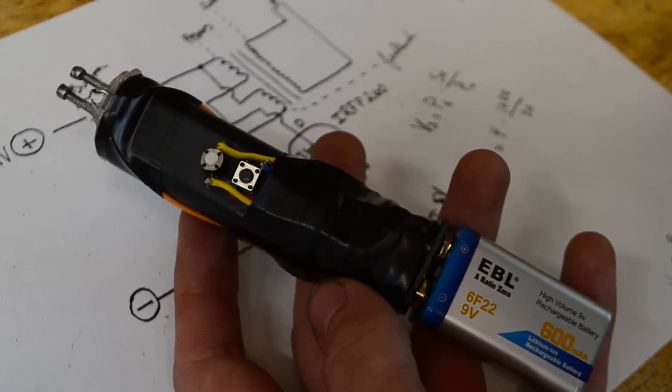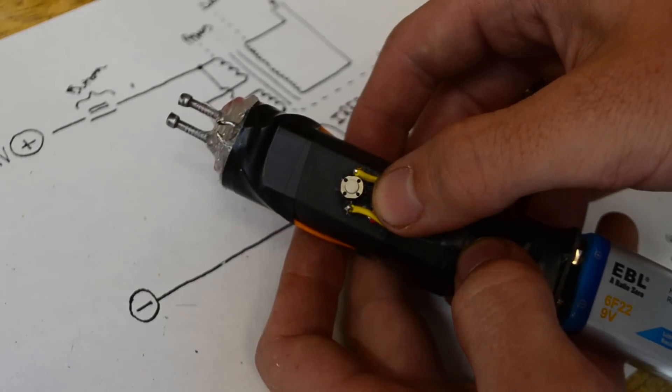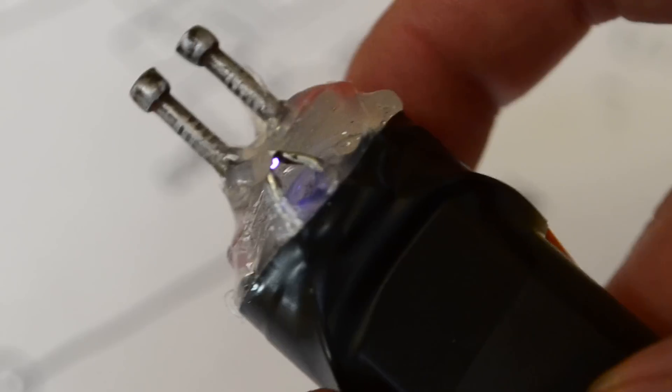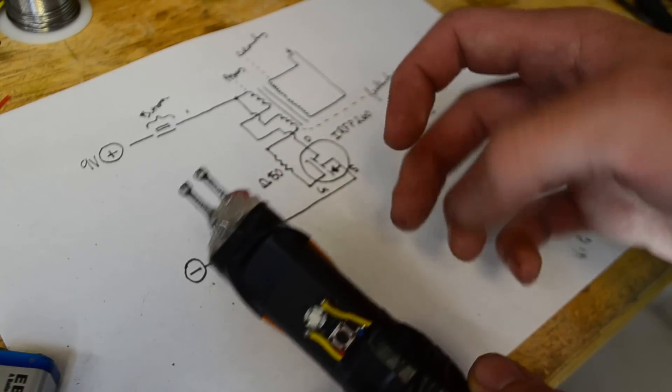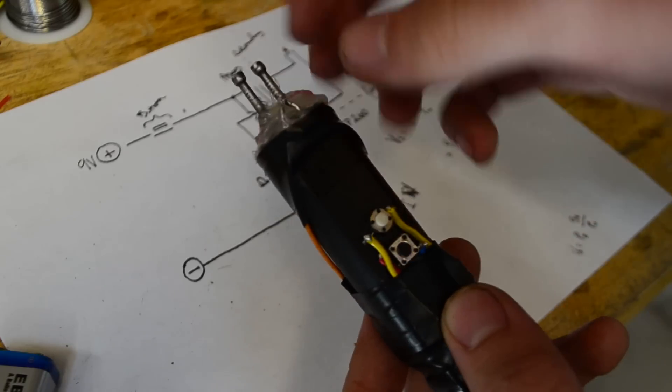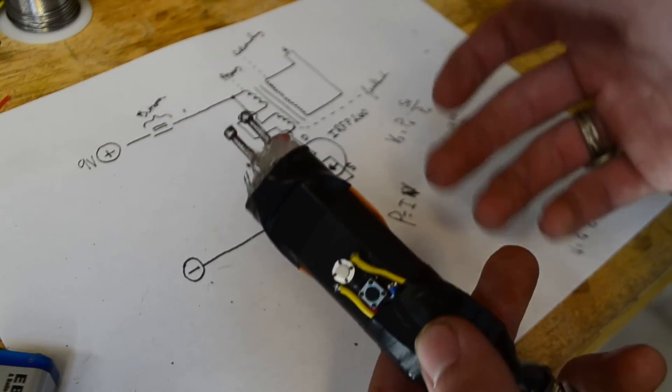And now my arc lighter slash pocket stun gun is complete. As you can see it has two buttons. The bottom button activates the stun gun. I did decide to scale down the arc a little bit. That's because I realized I had no need for such a big arc. For the simple task of lighting paper on fire, this does the trick just fine. There really is no need for a bigger arc.